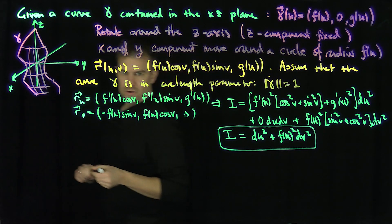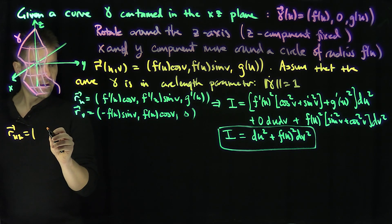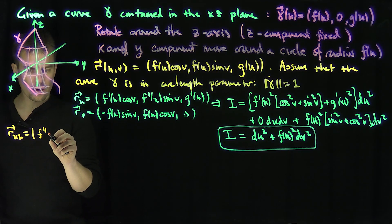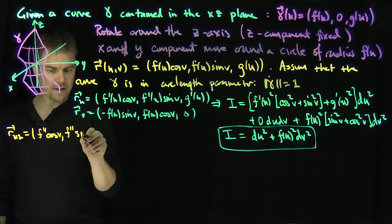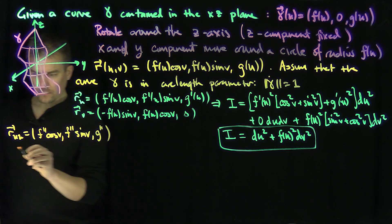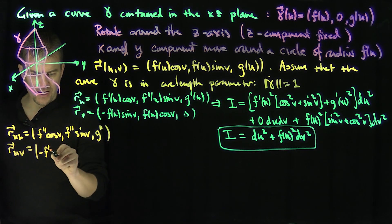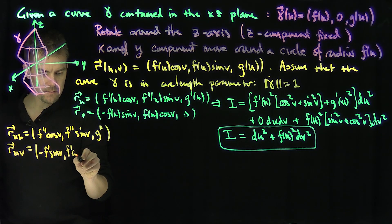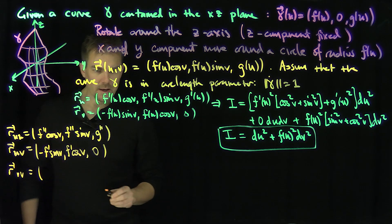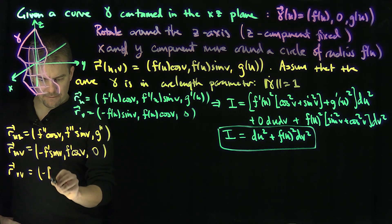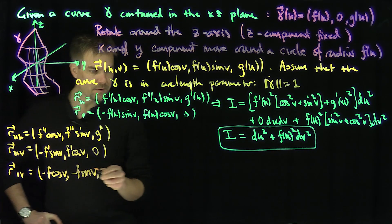Let's do the second fundamental form. We need the second derivatives and the normal vector. r_uu = (f''cos(v), f''sin(v), g''). r_uv = (-f'sin(v), f'cos(v), 0). r_vv = (-f cos(v), -f sin(v), 0).